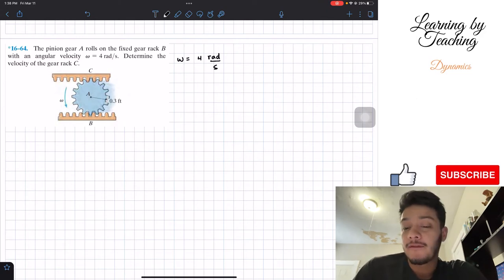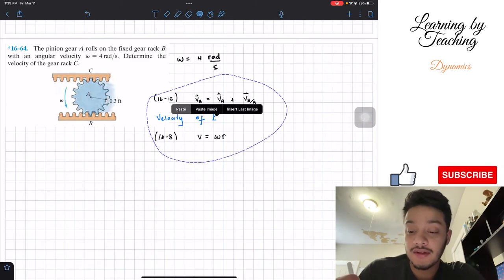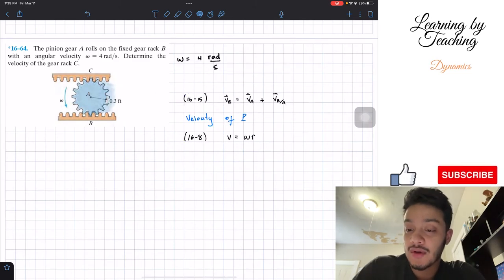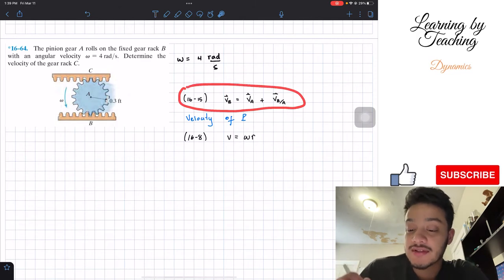For this problem, we're going to utilize the equation for relative motion, and this equation for relative motion for the velocity is equation 16.15.